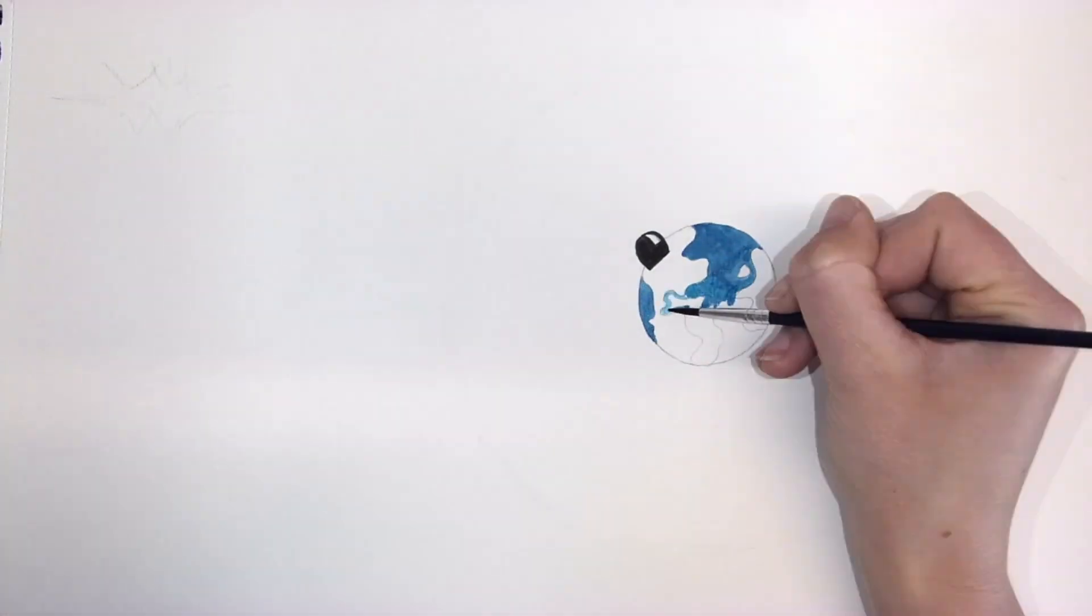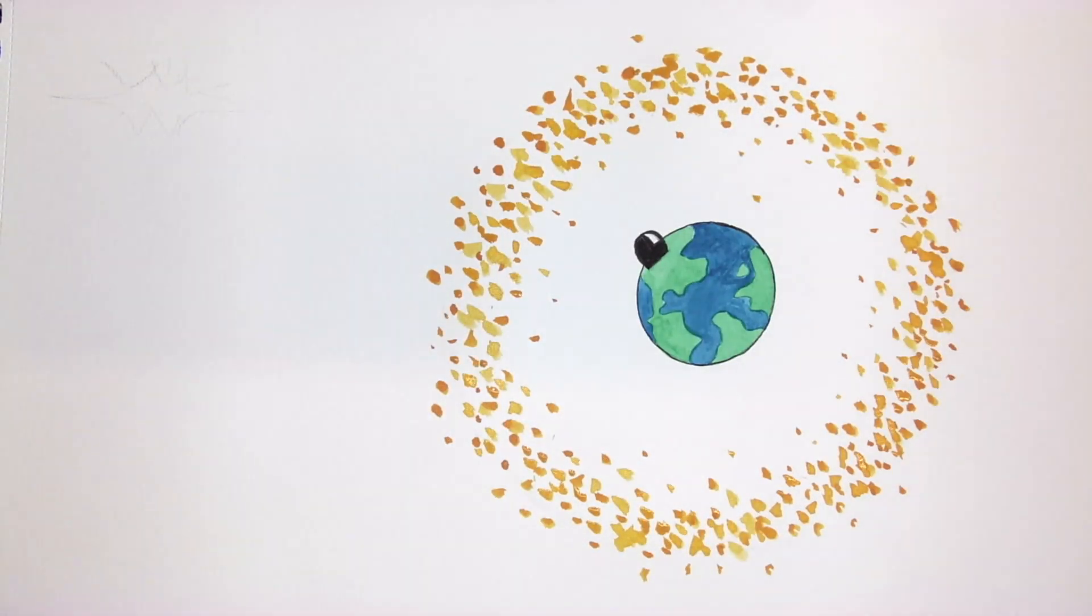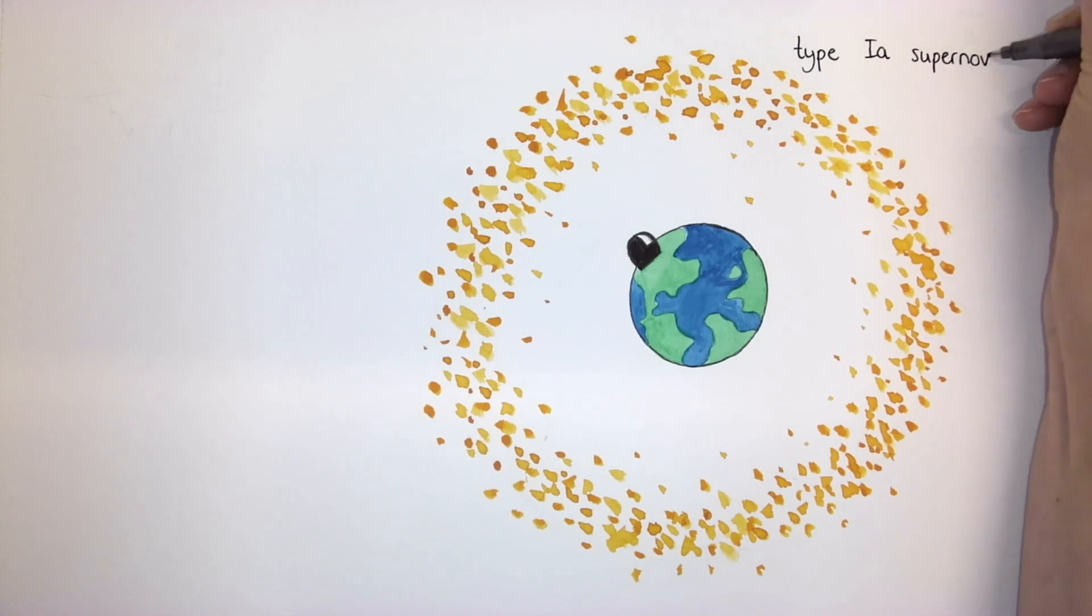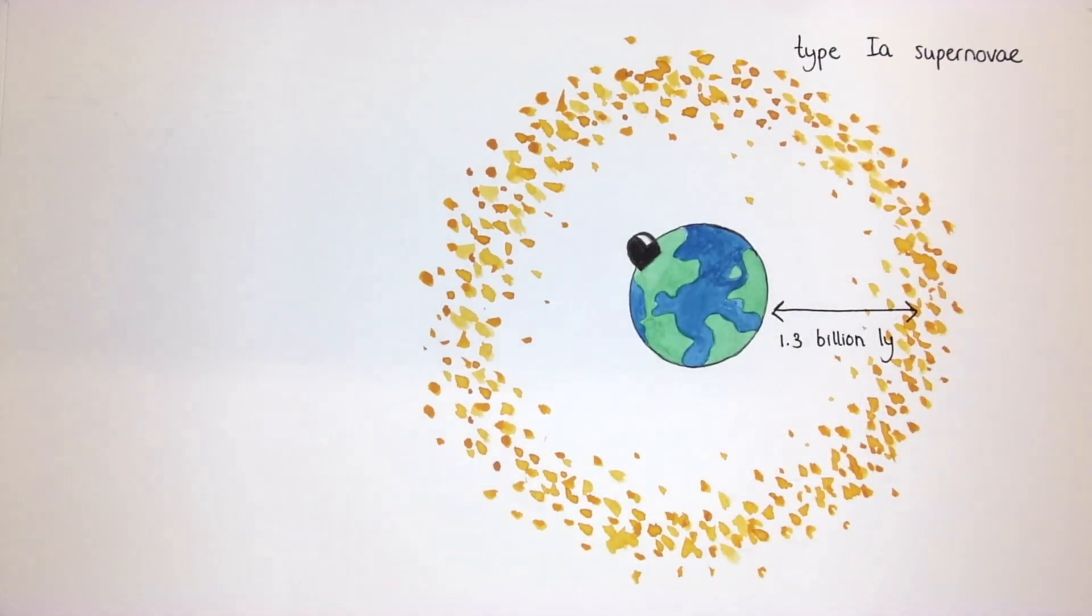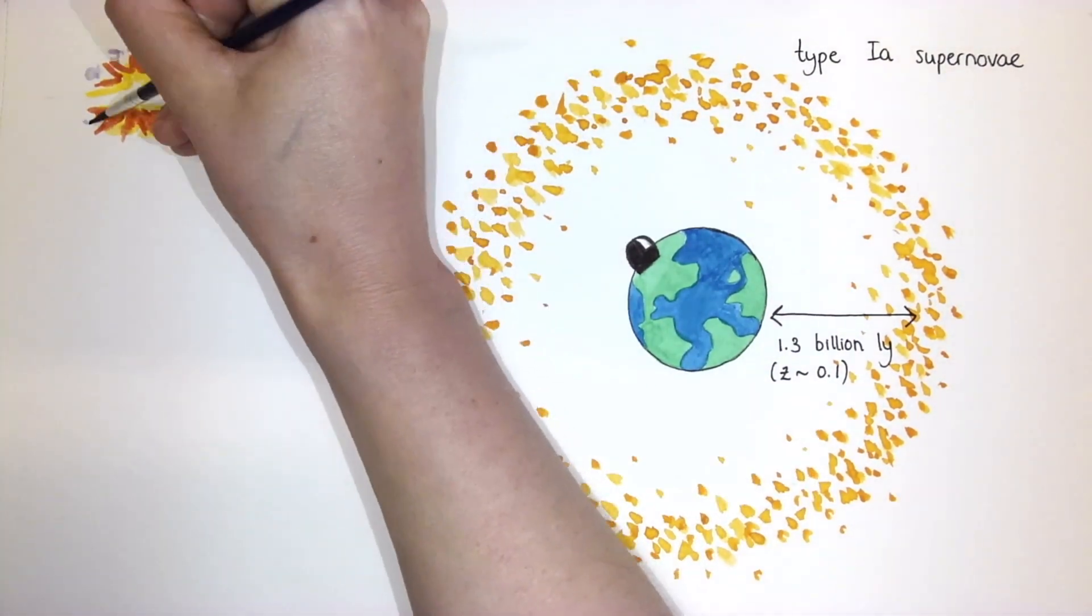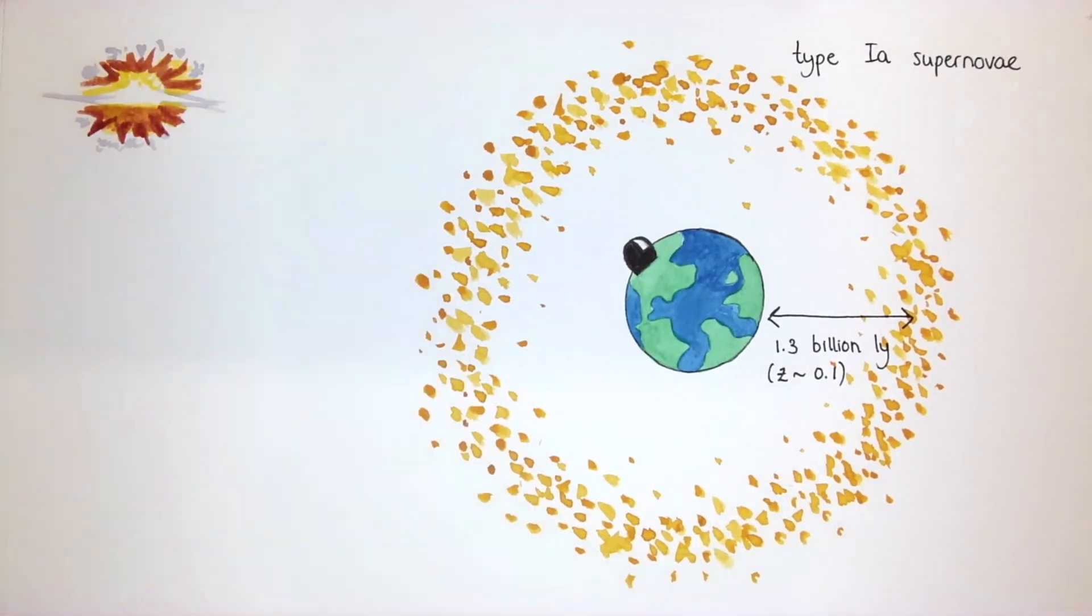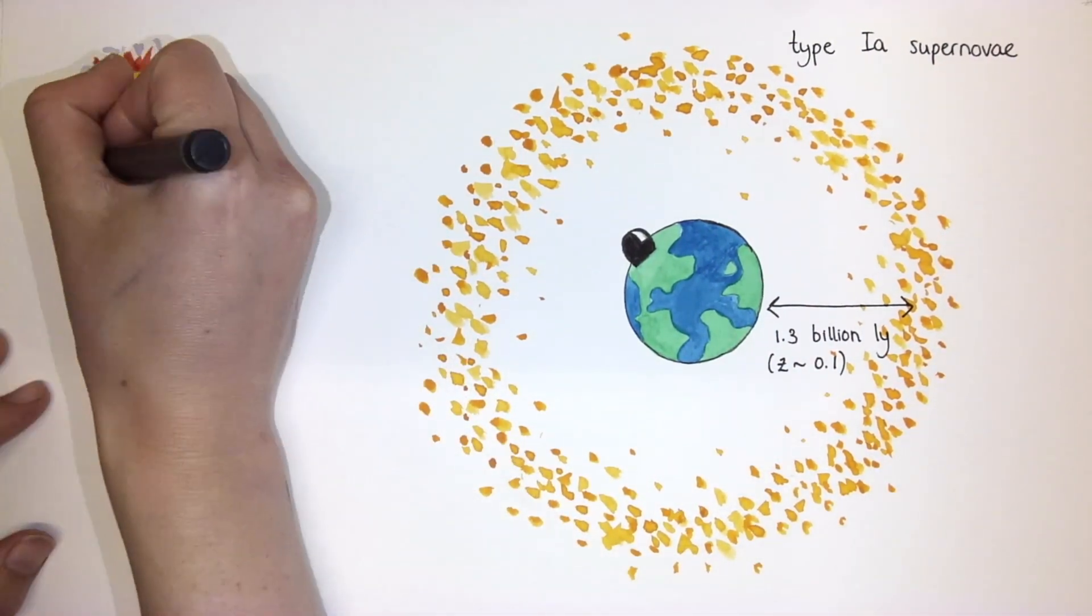Let's sketch a picture of how far away Supernova Zwicky is from us. The Zwicky Transient Facility, or ZTF, can usually discover Type Ia Supernovae up to distances of around 1.3 billion light-years, which astronomers refer to as a redshift of 0.1. ZTF has found thousands of such objects, but it had never seen a Type Ia Supernova so far away as Supernova Zwicky.